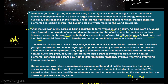Heavy elements like — beyond hydrogen and helium — beryllium, boron, carbon were formed. This reaction is called nucleosynthesis. So first light atoms formed, they fused, heavier ones formed, and from fusing those even heavier ones kept forming. This reaction continues in stars today as lighter elements are converted into heavier ones.